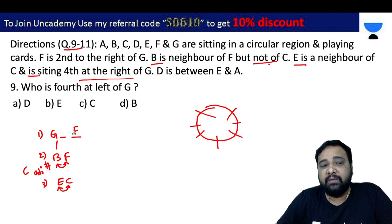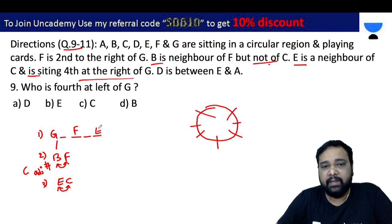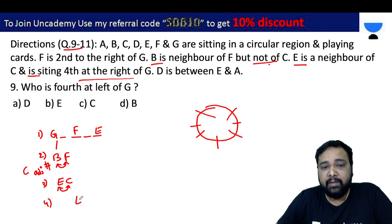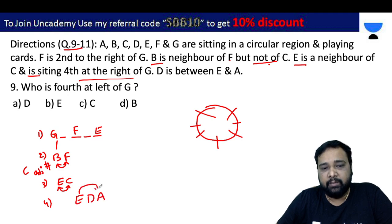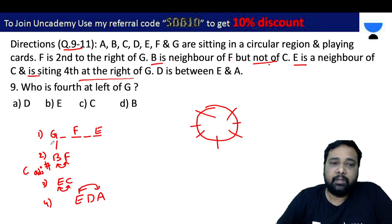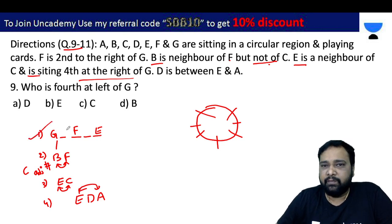G is the first, second, third, fourth — so E is at the fourth position to the right of G. D is between E and A.